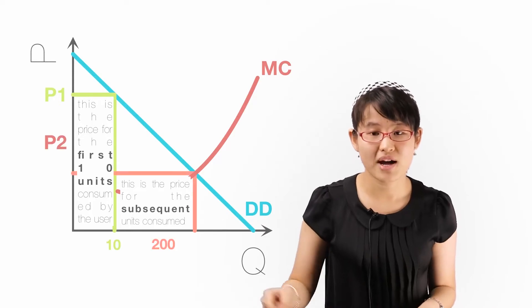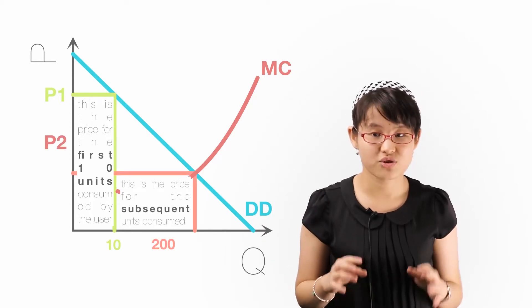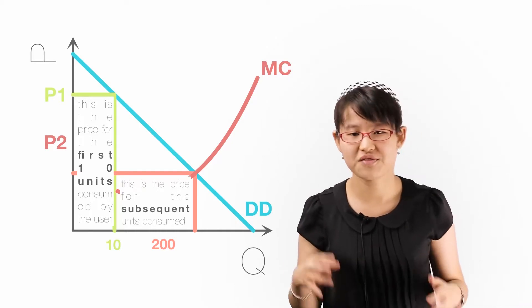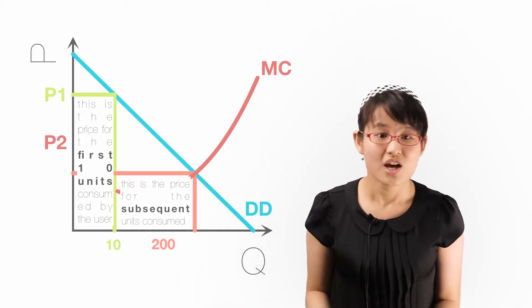Additional kilowatts are charged at a much lower rate. This is the electricity that is typically used for heating or cooking, where there are alternative fuels like kerosene.